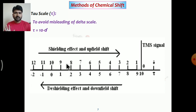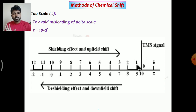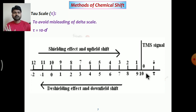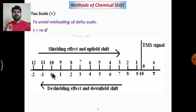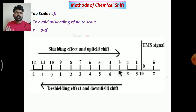We can compare tau and delta values: if the delta value is 1, then tau is around 9; if delta is 10, then tau is 0. So the tau scale is essentially the inverse of the delta scale.